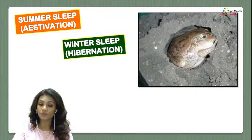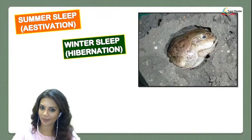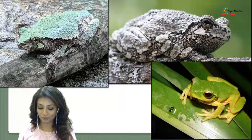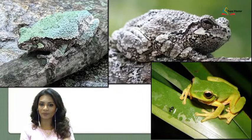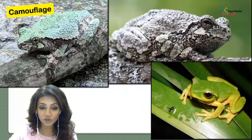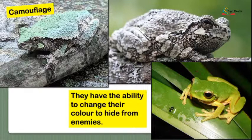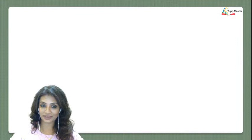So, summer sleep is estivation and winter sleep is hibernation. Look at these beautiful pictures — you can see three frogs that have managed to look just like the area where they're sitting. This property is called camouflaging. When a frog camouflages, it has the ability to change its color to hide from enemies.